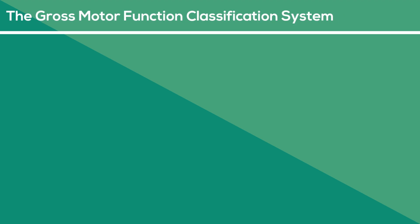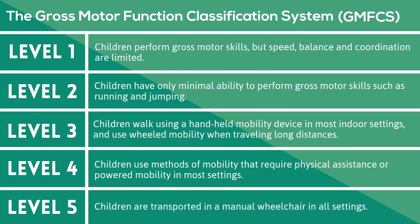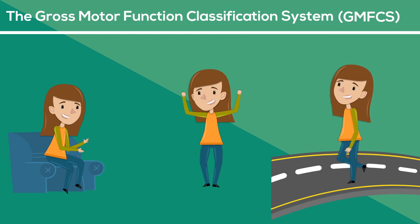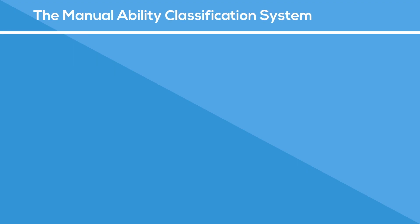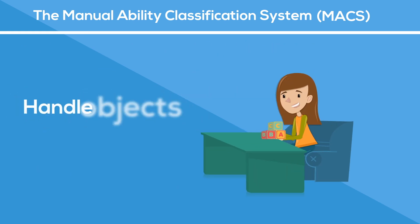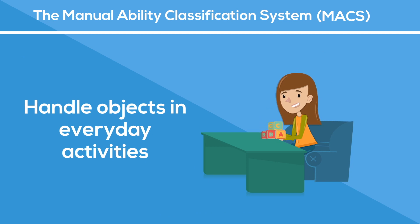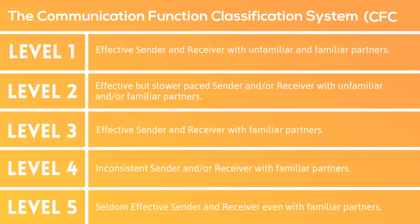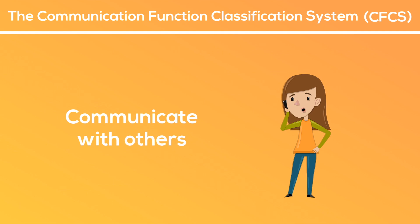In order to measure the severity of each child's abilities on a scale from one to five, there are several classification systems. The Gross Motor Function Classification System, GMFCS, assesses a child's movement ability such as sitting, moving around, and walking on a scale from one to five. The Manual Ability Classification System, MACS, measures a child's ability to use his or her hands to handle objects in everyday activities. And the Communication Function Classification System, CFCS, evaluates a child's ability to communicate with others.